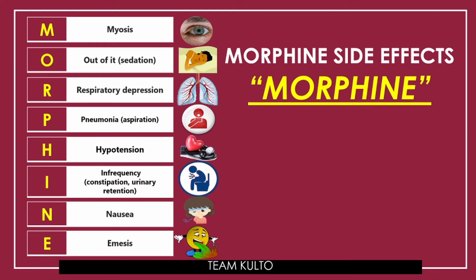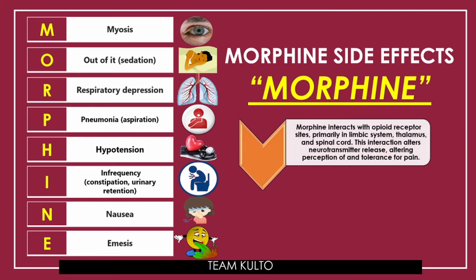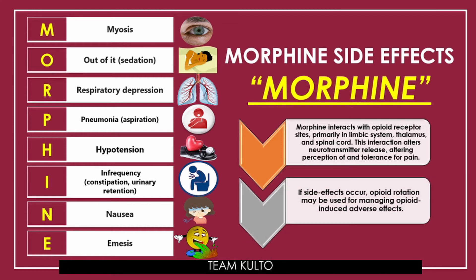Para mas lalong tumatak sa'yo ito, remember: morphine interacts with opioid receptor sites, primarily in the limbic system, thalamus, and spinal cord. This interaction alters the neurotransmitter release, altering perception of and tolerance for pain. If side effects occur, opioid rotation may be used for managing opioid-induced adverse effects. These are the side effects and important reminders with your morphine side effects.